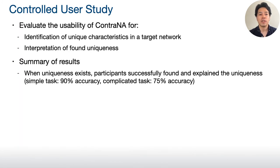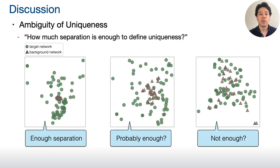We also evaluate the usability of CONTRANA with a controlled user study. Generally, the user study results show that when the target network has uniqueness, the participants successfully find and explain the uniqueness. One important discussion from the user study: some participants asked how much separation is enough to define the target network's uniqueness. This implies that we face some ambiguity when identifying the uniqueness. For example, probably many analysts will feel the left figure has enough separation to confirm that a target network has some uniqueness. However, for the other two figures, this is less clear to conclude. This limitation should be addressed in the future.